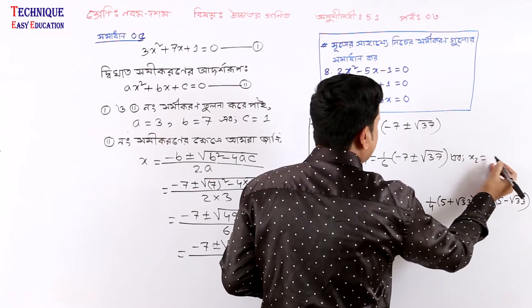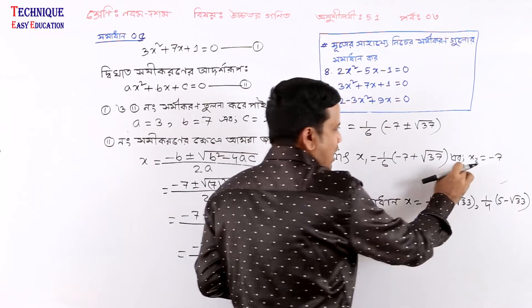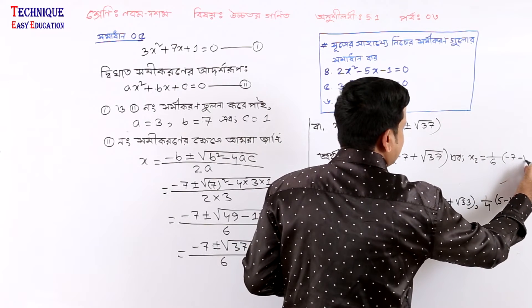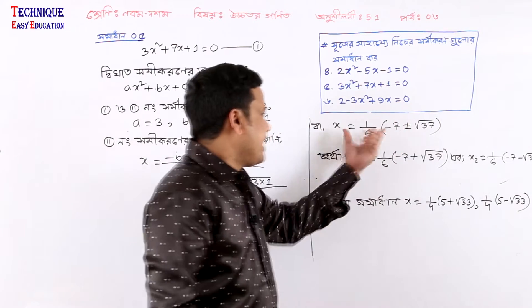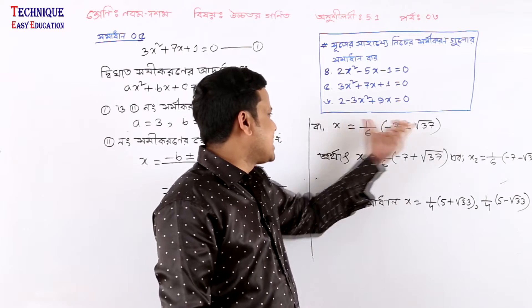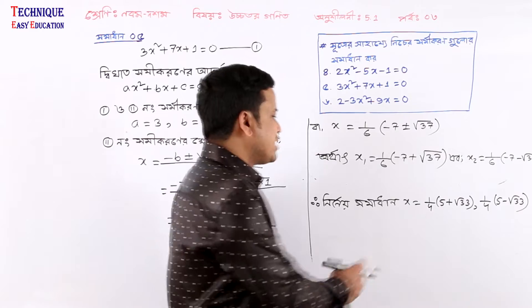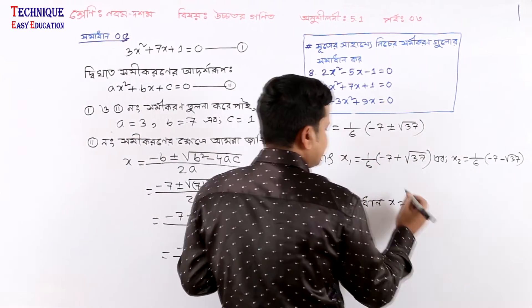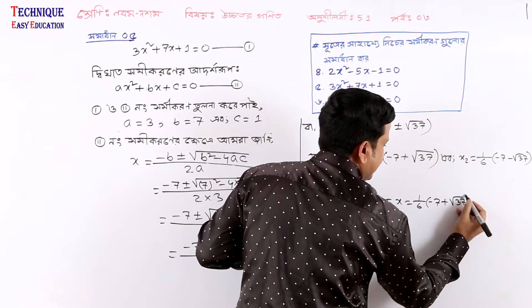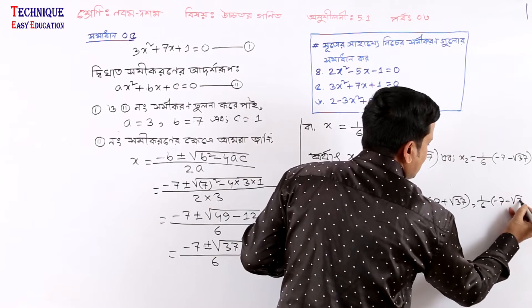So x2 equals minus 7. x1 gives us plus and x2 gives us minus. x1 equals 1 by 6 times minus 7 plus root 37, comma x2 equals 1 by 6 times minus 7 minus root 37.